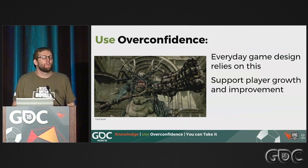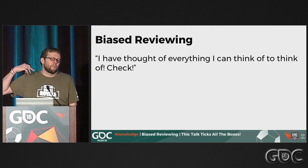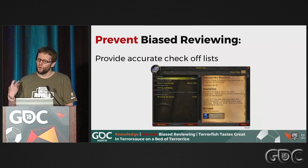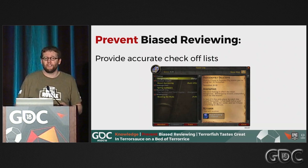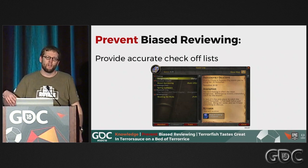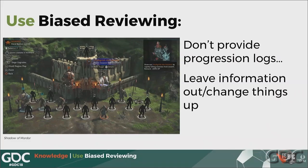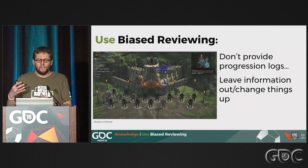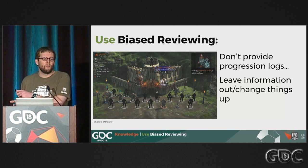Bias reviewing is simply thinking through what you need to do, deciding you've thought of everything you can think of — but you can't think of things you don't know. To prevent this, many games provide actual check-off lists that the player can carry with them so there's no biased review. You can use bias reviewing against players by not providing progression logs if the challenge of your game is to think of all the things and keep them in memory, or by providing progression but leaving information out or changing things up — Shadow of Mordor lets you learn an orc's weaknesses, but then another orc shows up unexpectedly, or the weakness changes mid-fight.